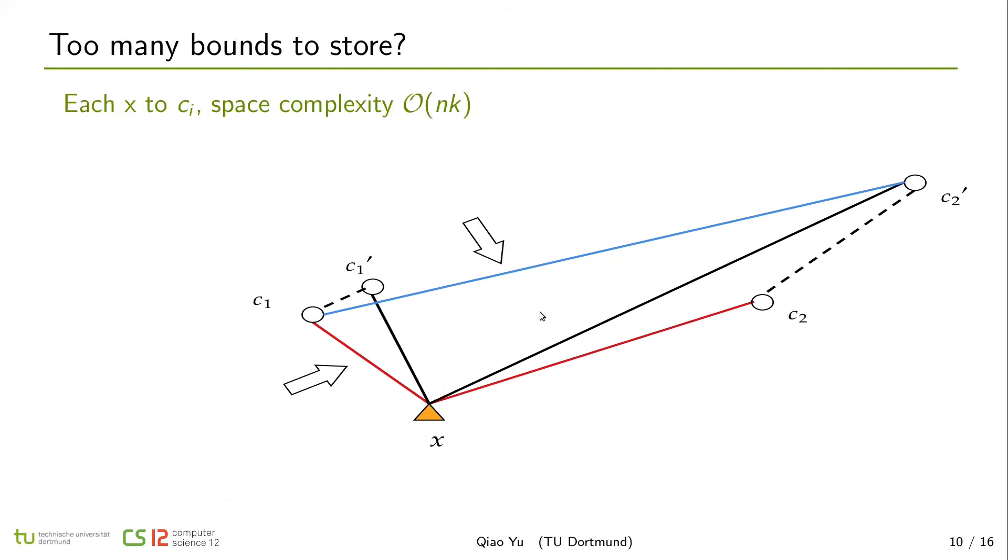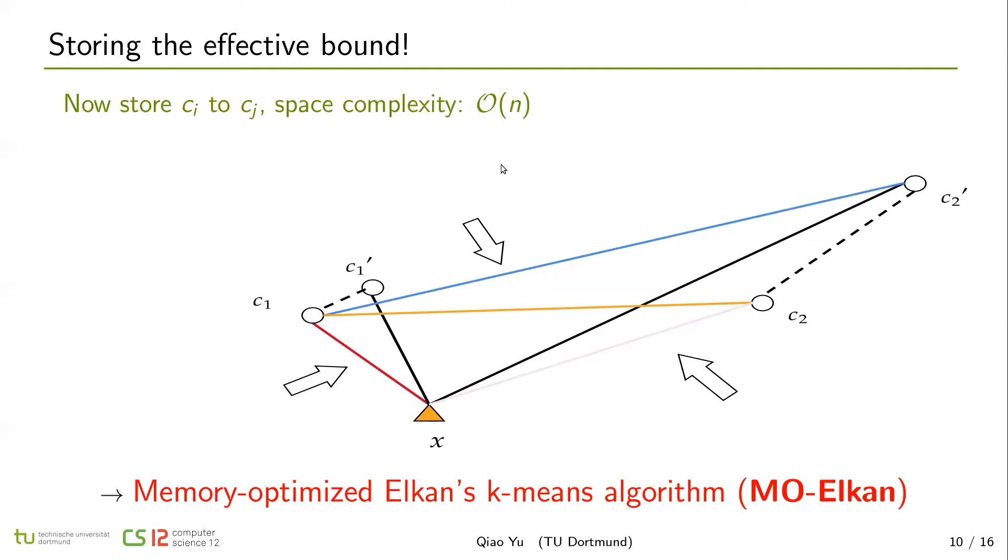Another shortcoming of Elkan is that it keeps too many bounds for each point. For example, Elkan's k-means stores lower bounds from each point to each center. This space complexity is big O(nk). So our another new lower bound can improve this big O(nk) to big O(n) by storing another variable distance instead.